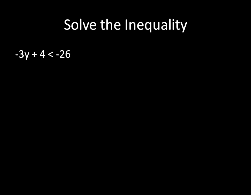Now let's solve this inequality here. We're going to start by subtracting 4 from both sides of this inequality. 4 minus 4 is 0, leaving us with negative 3y on the left side, and negative 26 minus 4 gives us negative 30 on the right side. Subtracting is not the same as multiplying or dividing by a negative — we don't switch the sign because we were just subtracting from both sides.